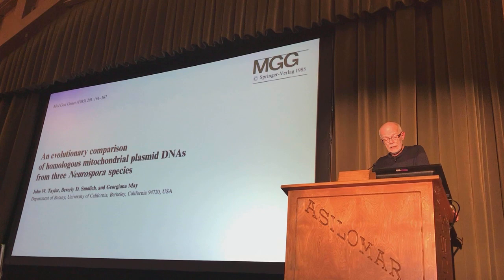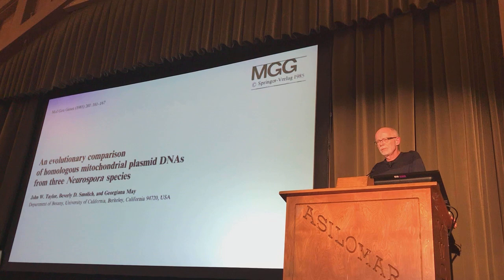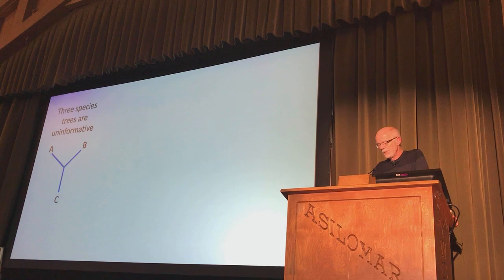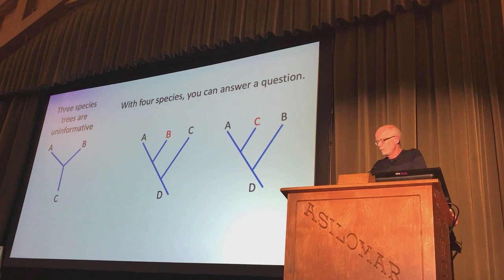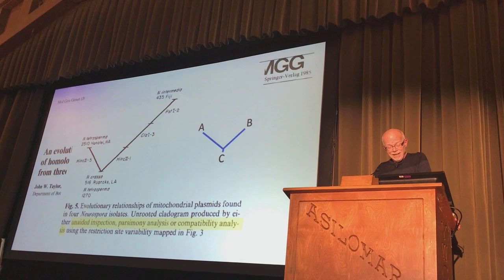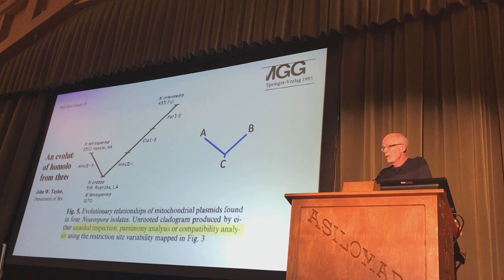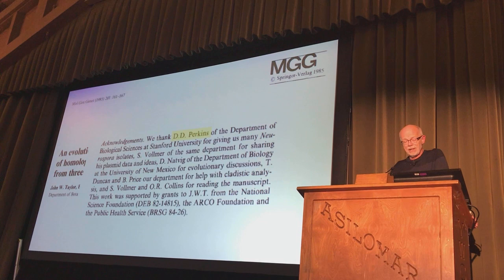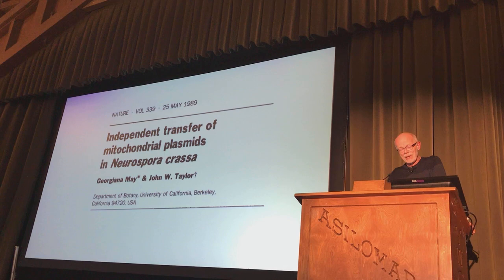This one shows you where you can publish when a field is new. It's an axiom of evolutionary biology that three-species trees are uninformative — you need four species to ask a question. But we published a three-species tree, and one branch was non-existent. The legend says 'unaided inspection, parsimony analysis, or compatibility analysis would give you the same answer.' This was the first time we got to thank David Perkins for providing strains. Then the apex of our work with mitochondrial plasmids — we got a paper into Nature, though it didn't start a new field of inquiry.